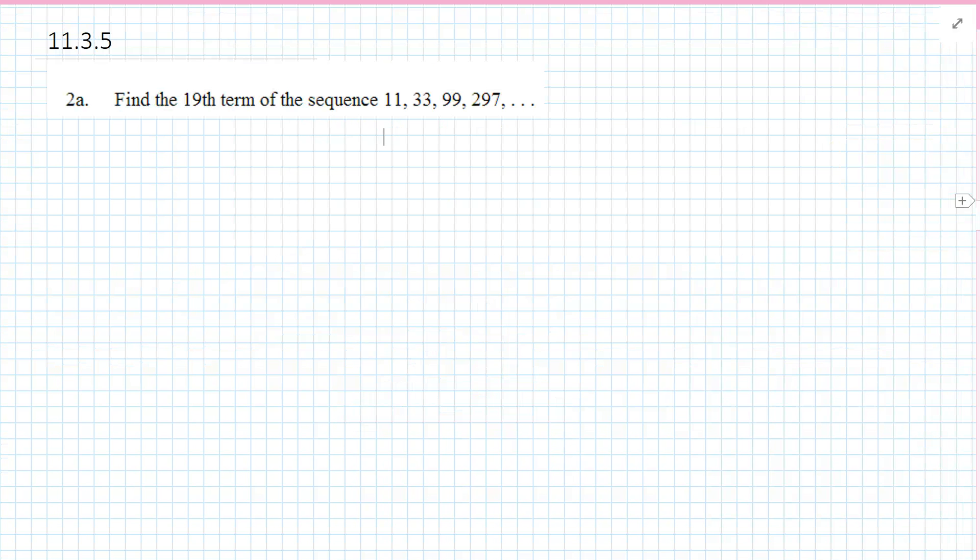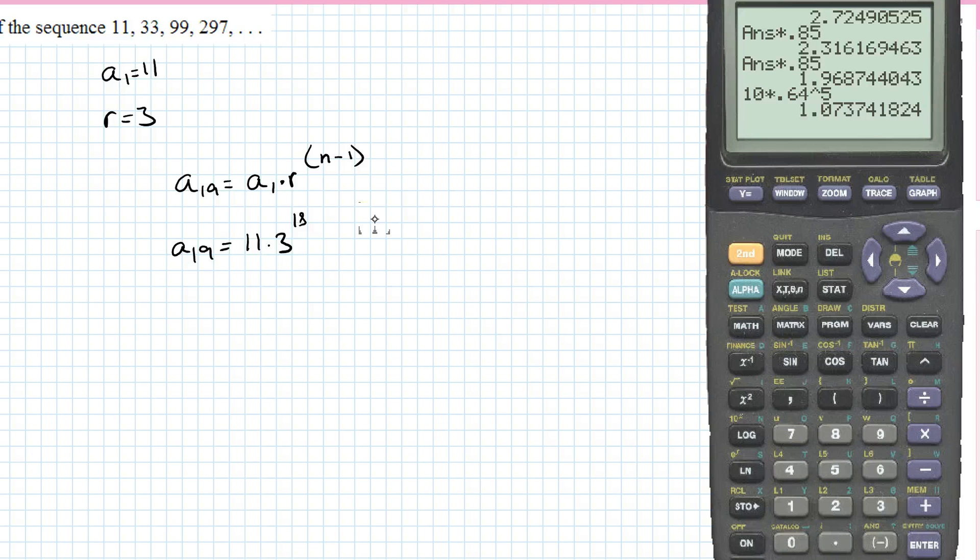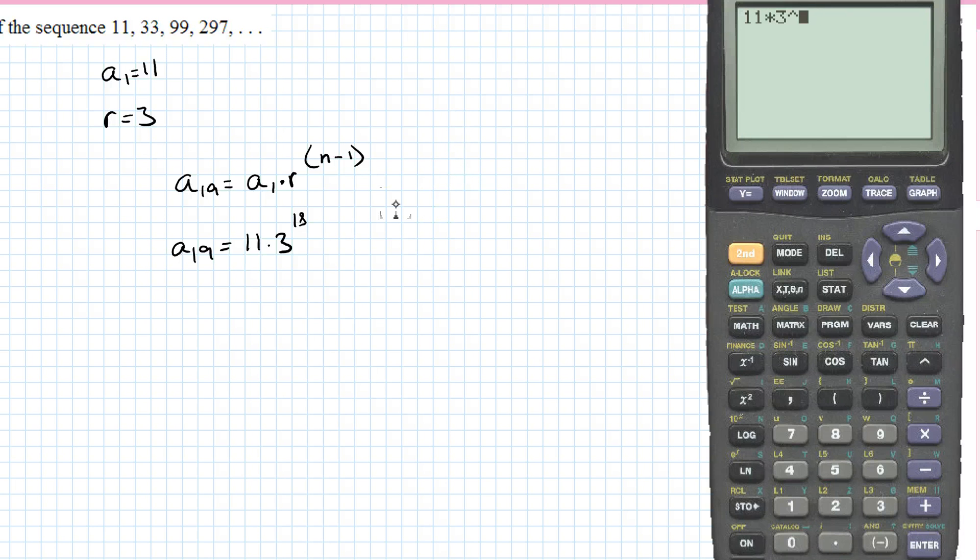Find the 19th term of the sequence. So a1 equals 11. If we divide these, we find R equals 3. So a19 equals a1 times R to the n minus 1. So a19 equals 11 times 3 to the n minus 1, to the 18th power. We can just plug that in.